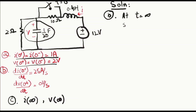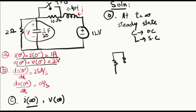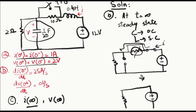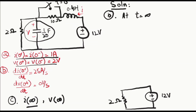Now let's move to part C. At t equals infinity, steady state has been reached. At steady state, the capacitor acts as an open circuit and the inductor acts as a short circuit. We redraw the circuit accordingly. With the switch closed, the resistor in parallel with the short circuit path is removed, since current flows only through the short circuit.